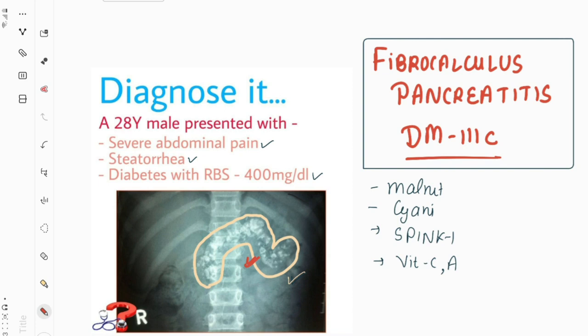The patient can also develop complications similar to those of diabetes, including both macrovascular and microvascular complications. Microvascular complications include neuropathy, retinopathy, and nephropathy. Macrovascular complications include accelerated atherosclerosis and coronary artery disease.